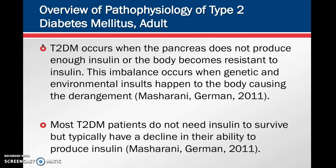Type 2 diabetes occurs when the pancreas does not produce enough insulin or the body becomes resistant to insulin. This imbalance occurs when genetic and environmental insults cause derangement in the body. Most type 2 diabetic patients do not need insulin to survive initially, but typically have a decline in their ability to produce insulin, so quite often these patients will eventually end up on insulin.